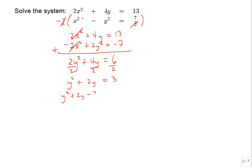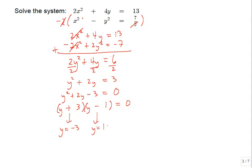To solve this quadratic, we subtract 3 to get y squared plus 2y minus 3 equals 0, then try factoring. We can use y and y for the y-squared, and 3 and 1 for the constant. Making 3 positive and 1 negative gives a middle term of positive 2. This factors as (y plus 3)(y minus 1), so y could be negative 3 or positive 1.